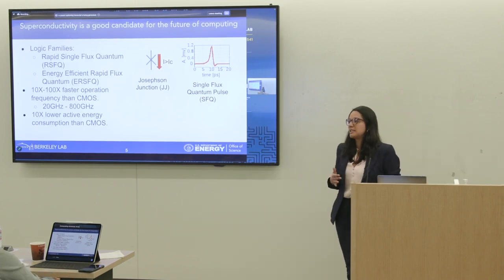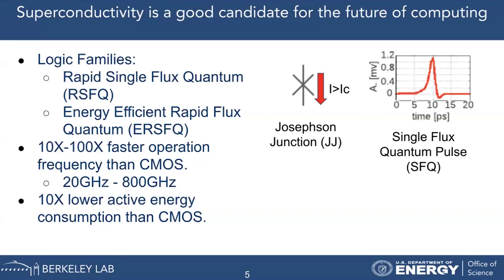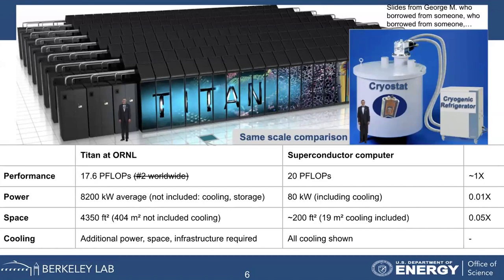People have been working on logic families and with these logic families we have built computing elements — multipliers, adders, nodes — what you need to build a computer. We have demonstrated that we can run 10 to 100 times faster than current technologies and achieve 10 times lower active energy than CMOS. A projection was made comparing a superconducting computer with the Titan computer, which was at that time the second fastest computer in the world. The superconducting computer achieves comparable performance but takes 100 times less power and occupies a fraction of the area.